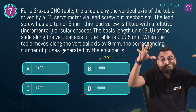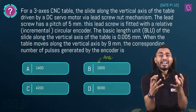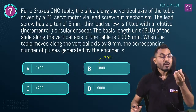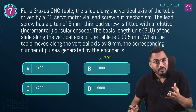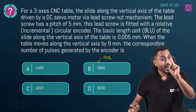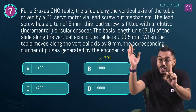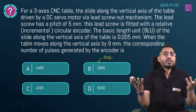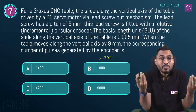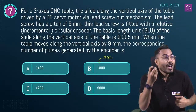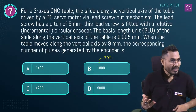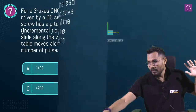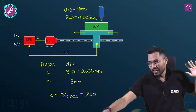Don't be frightened by the long question — the key takeaway is simple: BLU is given, one pulse advances the table by BLU, and to travel 9 mm you need 9 ÷ 0.005 = 1800 pulses.